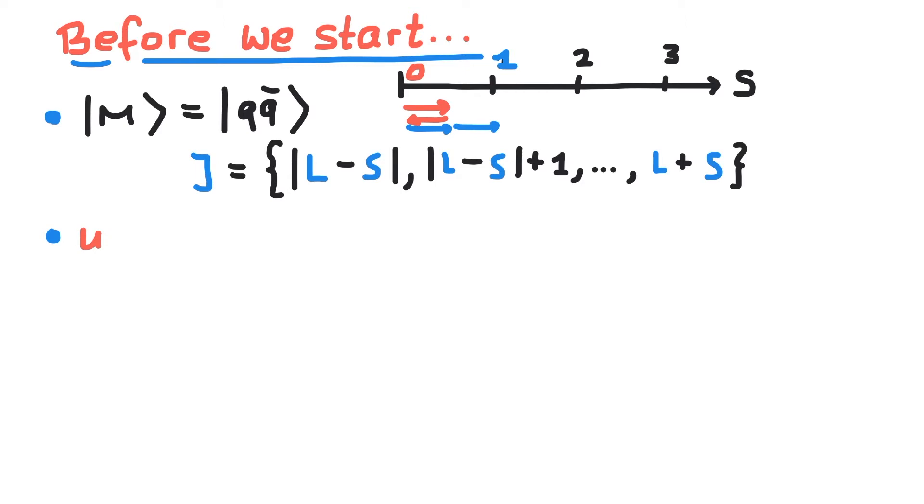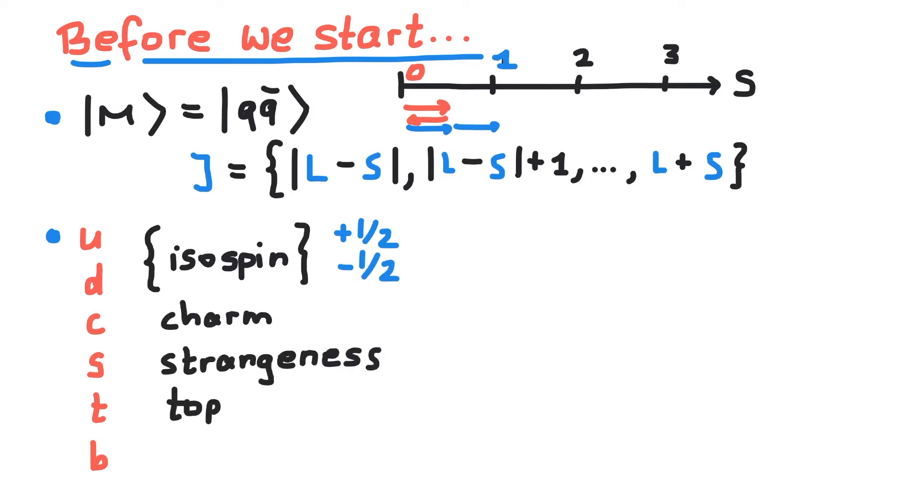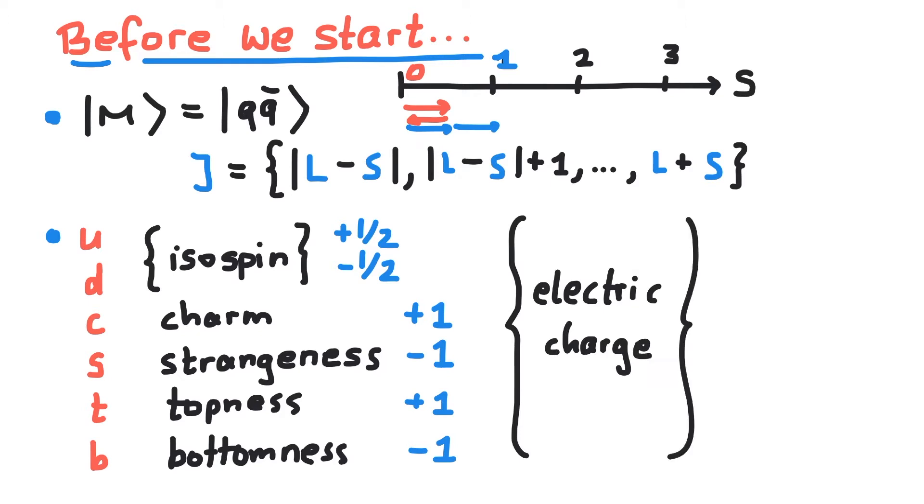Quarks have so-called flavor quantum numbers. The up and down quarks have positive and negative isospin, and the heavier quarks have quantum numbers corresponding to their name. We follow the convention that the sign of the quantum numbers correspond to the sign of their electric charge. For the antiquarks, all signs change.